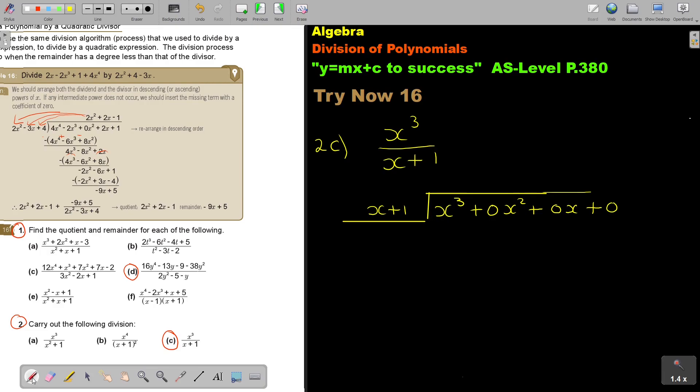Then, I do exactly the same as I did with the previous one. So, I take this, divide this. So, it's x squared. And then, I start and I multiply. So, if I multiply, I get x cubed. If I multiply, I get x squared. Then, I take and I draw the line. Then, I change the signs. So, now, remember that this one is going to be negative x squared.